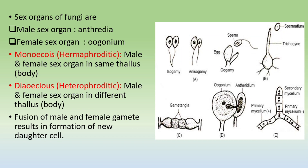The sex organs of fungi are: the male organ is called antheridia and the female organ is called oogonium. There are two terms — monoecious and dioecious fungi. Monoecious fungi are hermaphroditic, meaning both male and female sex organs are present in the same thallus. Dioecious fungi are heterothallic, meaning the male and female sex organs are present in different bodies. The fusion of these gametes results in the formation of daughter cells.